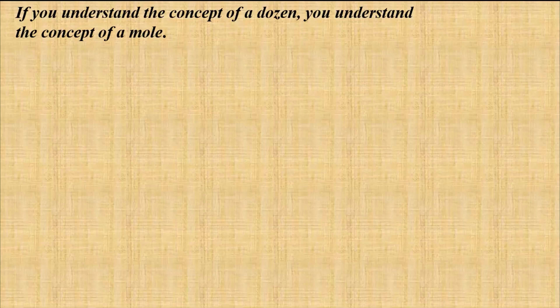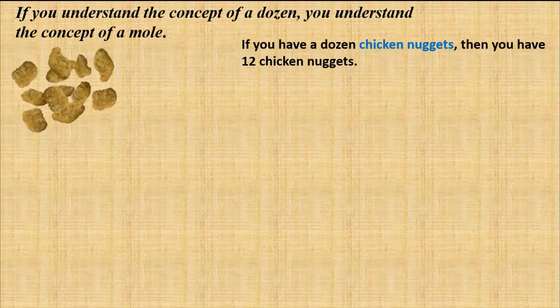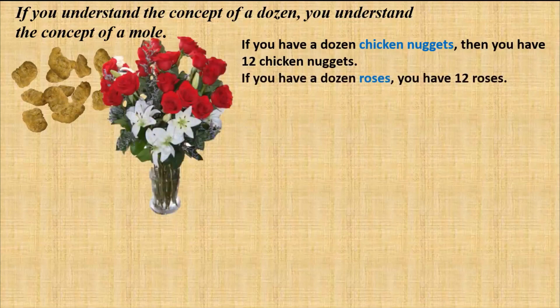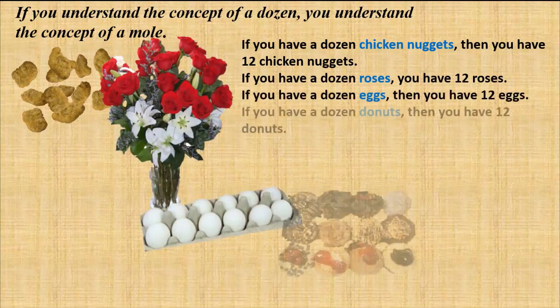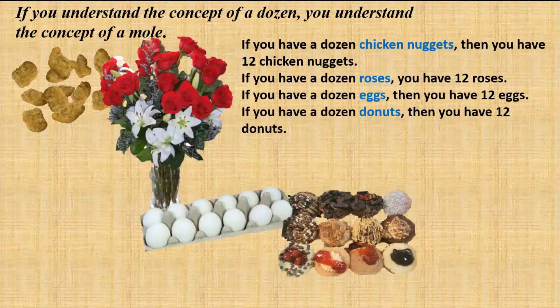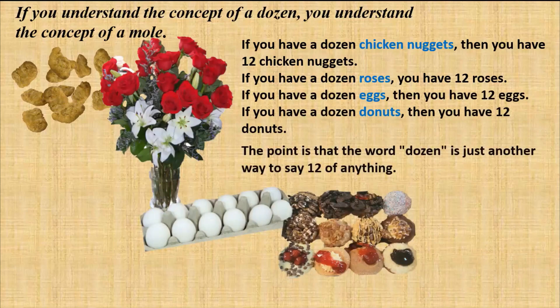The most important thing to know in this entire presentation is that if you understand the concept of a dozen, then you understand the concept of a mole — they're identical concepts. For example, a dozen chicken nuggets is 12 chicken nuggets, a dozen roses is 12 roses, a dozen eggs is 12 eggs. The word 'dozen' is just another way to say 12 of something.